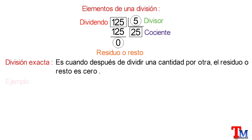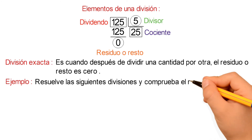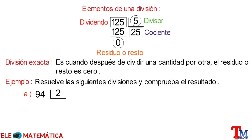Veamos algunos ejemplos. Resuelve las siguientes divisiones y comprueba el resultado. Literal A: 94 dividido para 2. Para comenzar, seleccionaremos la primera cifra de izquierda a derecha en el dividendo, siempre y cuando ésta sea mayor o igual que el divisor. Como este valor es mayor que el divisor, buscamos un número que multiplicado por 2 se acerque al 9.